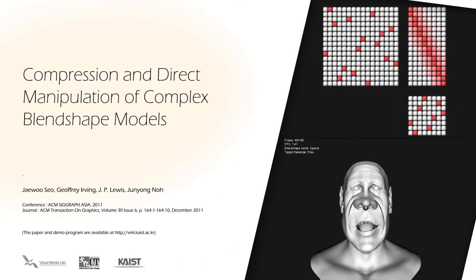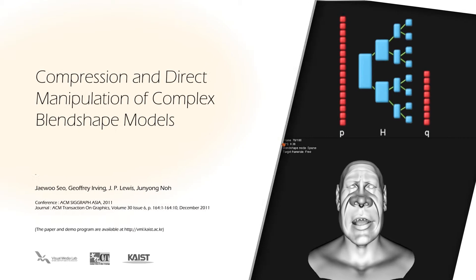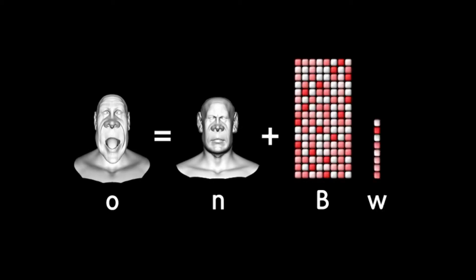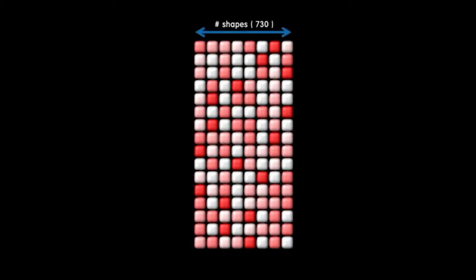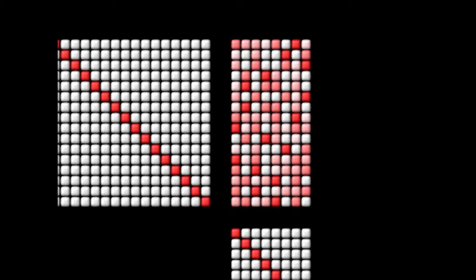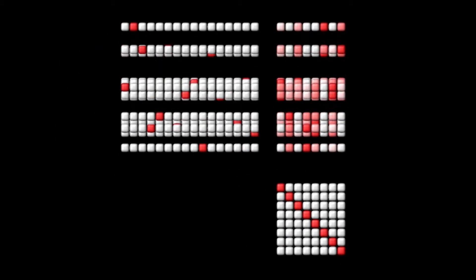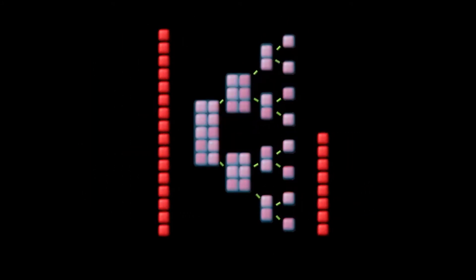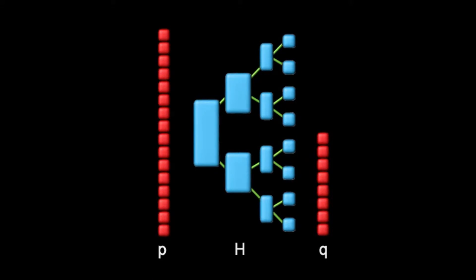We introduce a new method to compress and directly manipulate complex blend shape models. Conventional blend shape processing consists of one vector addition and one matrix-vector multiplication. The blend shape matrix holds all the data for target shapes and the displacement of vertices, resulting in a large matrix with hundreds of columns and hundreds of thousands of rows. To compress this, we first reorder the matrix to concentrate hiring blocks some diagonal, and apply hierarchically semi-separable matrix compression, producing two extra permutation vectors P and Q.